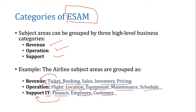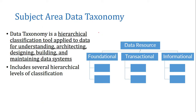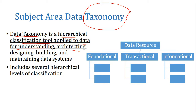For every business, data can be categorized into either revenue, operation, or support. Now let's look at subject area data taxonomy. Taxonomy is a hierarchical classification of things associated with a specific domain. In data taxonomy, it is a hierarchical classification tool applied to data for understanding, architecting, designing, building, and maintaining data systems. It may include several hierarchical levels of classification, and by creating this hierarchy you can easily design enterprise data models.